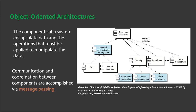We also have object-oriented architecture. The components of a system encapsulate data and the operations that must be applied to manipulate the data. A central component, for example, instantiates another object. The coordination and communication between components are established via message passing.